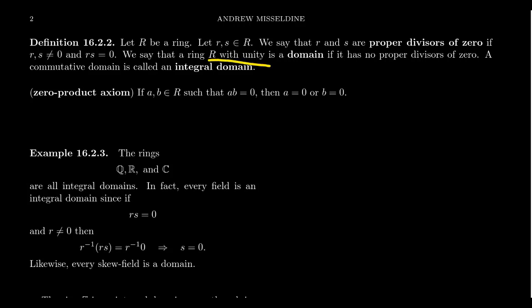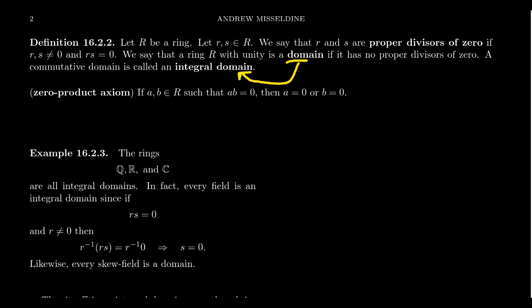A ring with unity is called a domain if it has no proper divisors of 0 — there is no product of non-zero elements that gives you 0. When it comes to a domain, we always require it has unity and no zero divisors. A commutative domain is typically called an integral domain. One has to be careful in the literature: some people, especially those entrenched in commutative algebra, use 'domain' to mean 'integral domain.' But in our lecture series, a domain may or may not be commutative, whereas an integral domain will always be commutative.